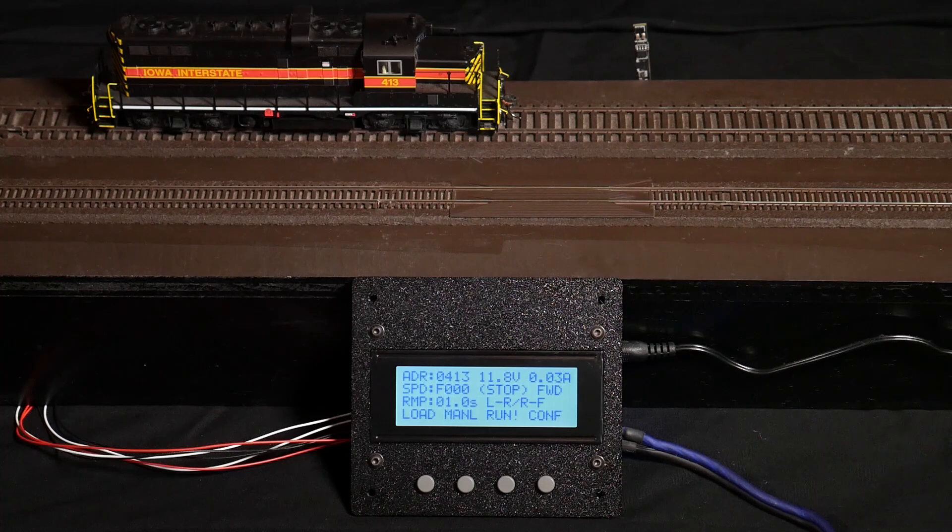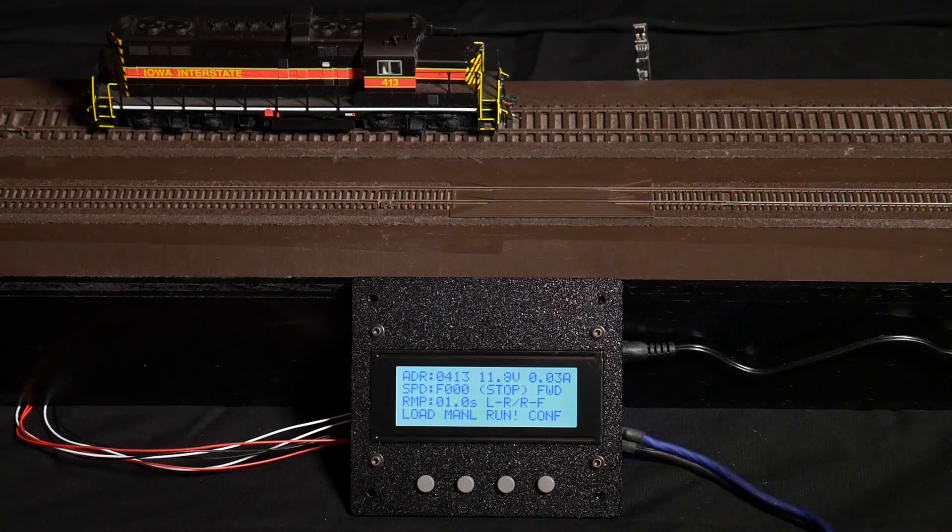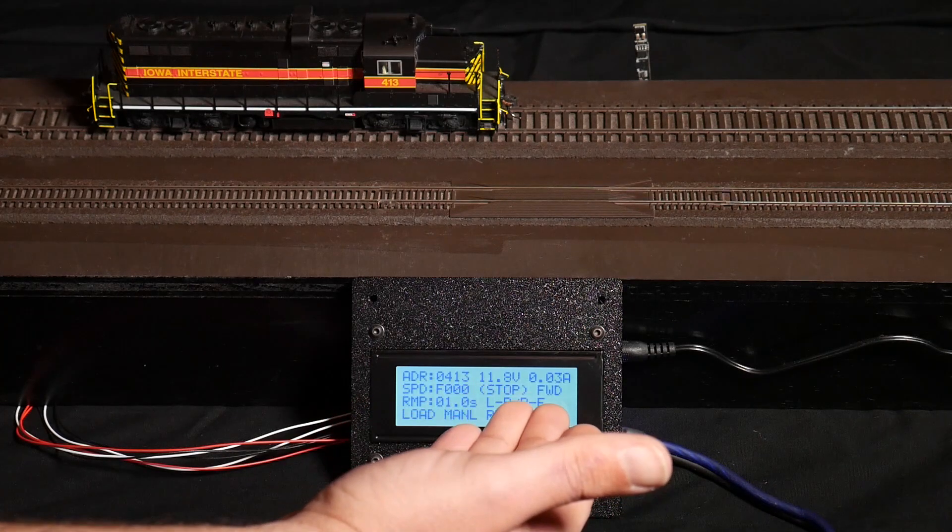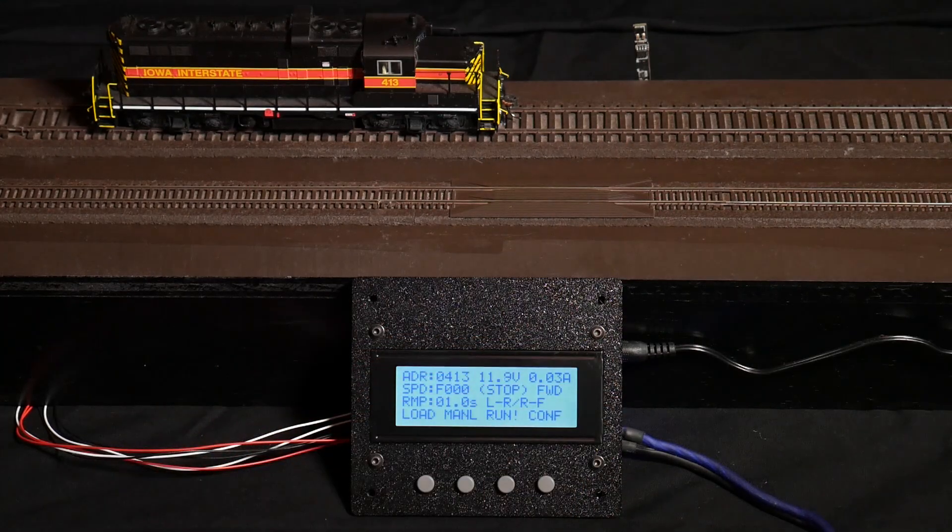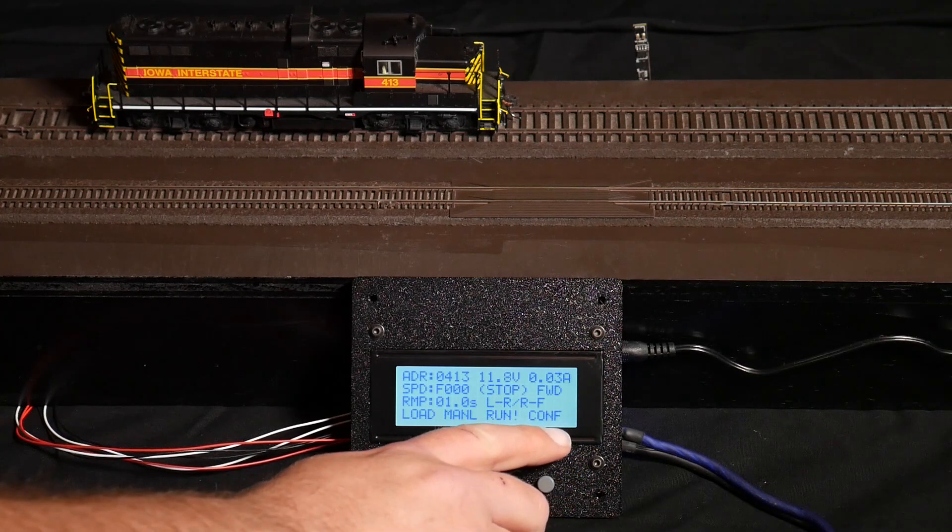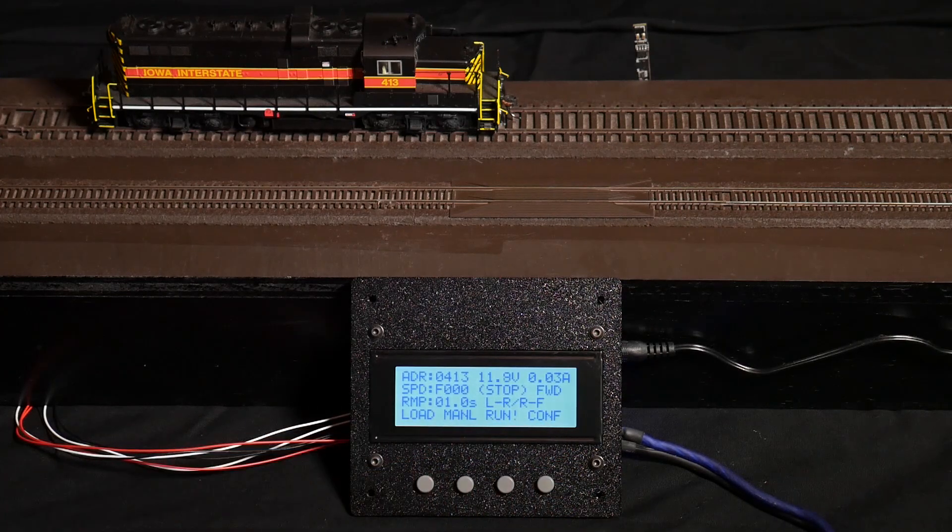Now I'd like to show you a little bit of the easy-to-use Motorman interface. As you see here, it features a four-line LCD panel that displays a large amount of information about what the controller is currently doing, as well as four function keys whose behavior is defined on the bottom line of the screen.